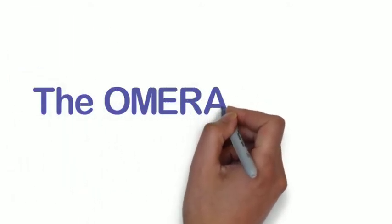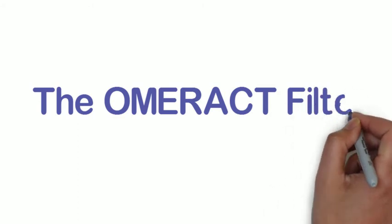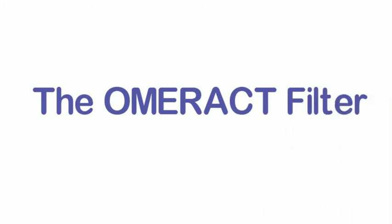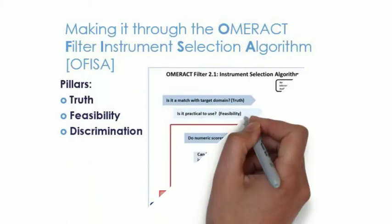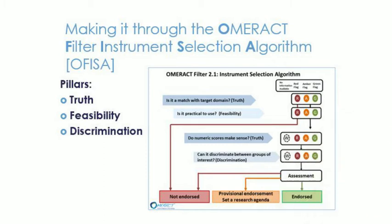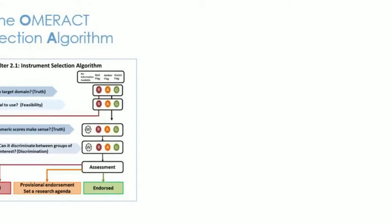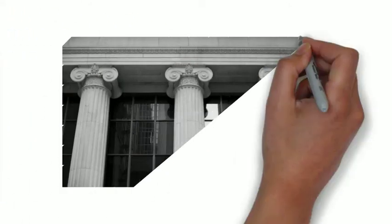Each candidate instrument will move through a set of criteria that we call the OMRACT filter to assess whether there is sufficient evidence for its use in clinical research. The OMRACT filter 2.1 instrument selection algorithm, known by its acronym OFISA, describes this process. The criteria is built on three pillars, first described by OMRACT in 1998, of truth, discrimination, and feasibility.